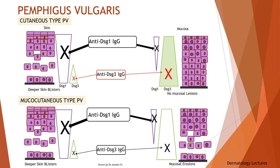Histologic examination of cutaneous lesions demonstrates suprabasilar acantholysis, a typical finding of pemphigus vulgaris. In the mucocutaneous type of pemphigus vulgaris, the serum contains both anti-desmoglein-1 and anti-desmoglein-3 IgG, so the functions of both desmogleins are compromised and blisters occur in both the skin and mucous membranes.